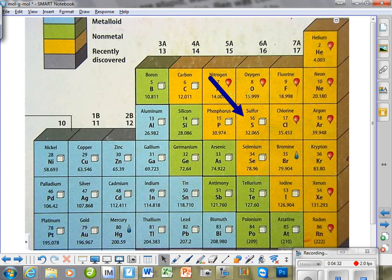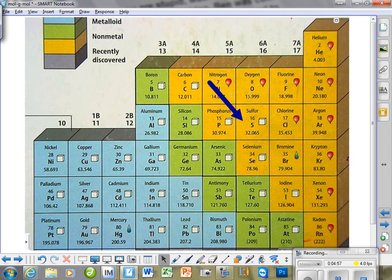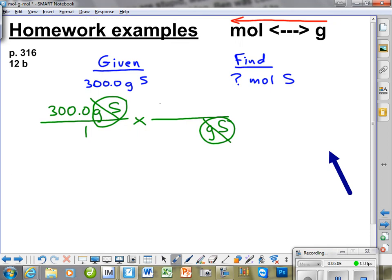Again, we go to the periodic chart, and we see that sulfur is 32.065 grams per mole. And so what we're going to do is take that number. We're going to round it to 4 sig figs because that's all we have in our given. And let's take a look there. See, 300.0 grams. So we're going to take this 32.065 and round it to 32.07.